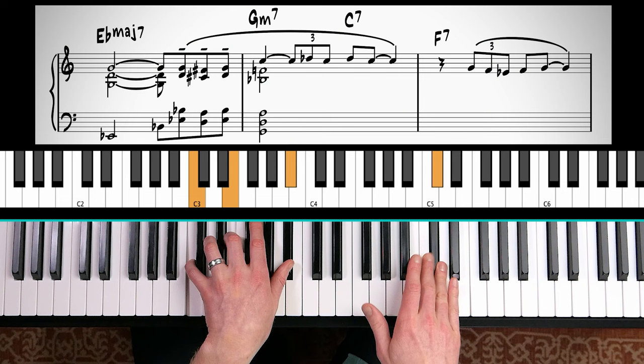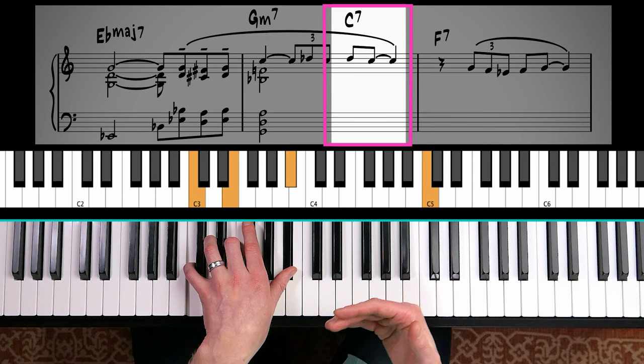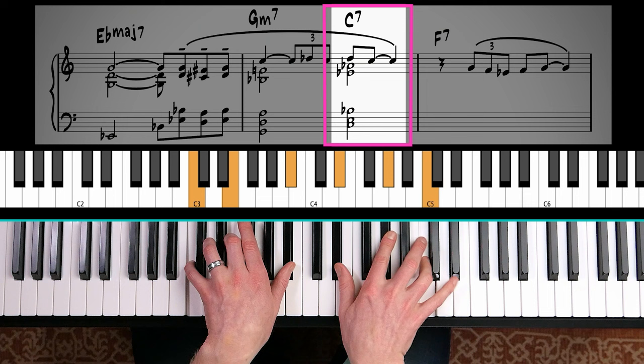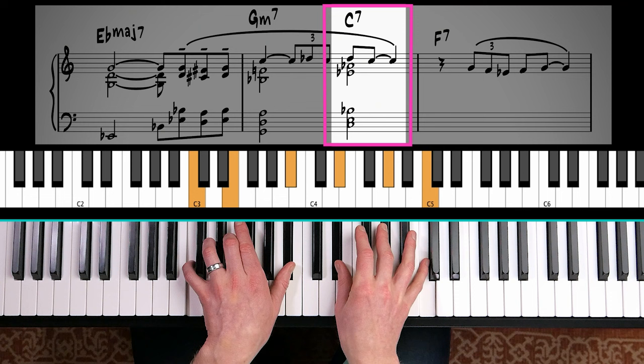Now we have a C dominant seven chord. I'm going to look to play an upper structure for the vast majority of dominant seven chords. So I'm actually going to play A flat major, but I'll play it like this. In inversion, E flat, A flat, C, but I'll just hold off on the C because the melody starts on D flat and then comes down.